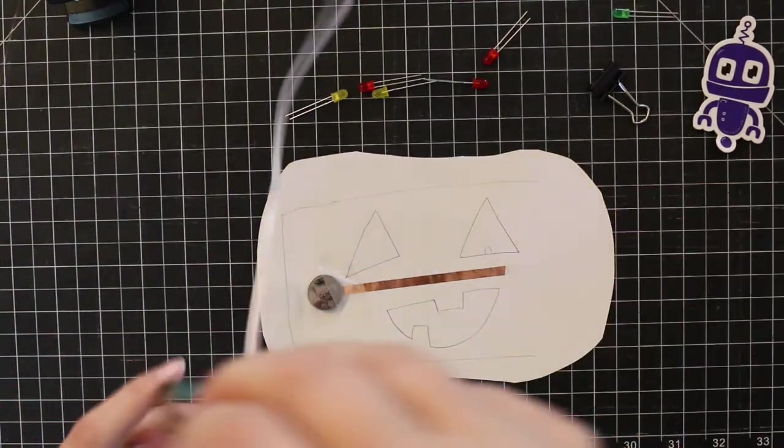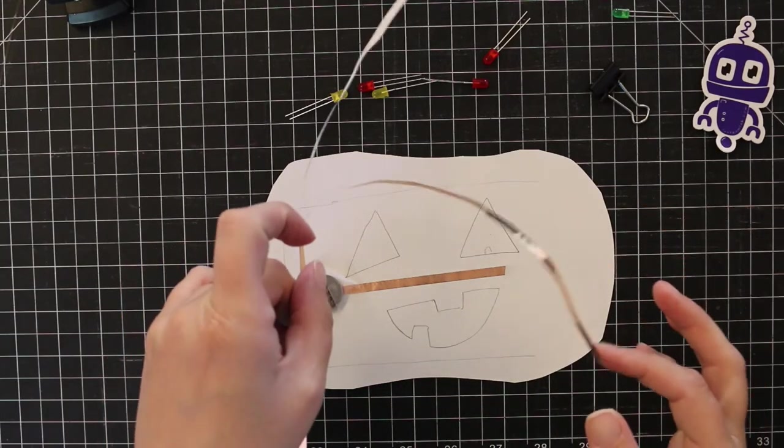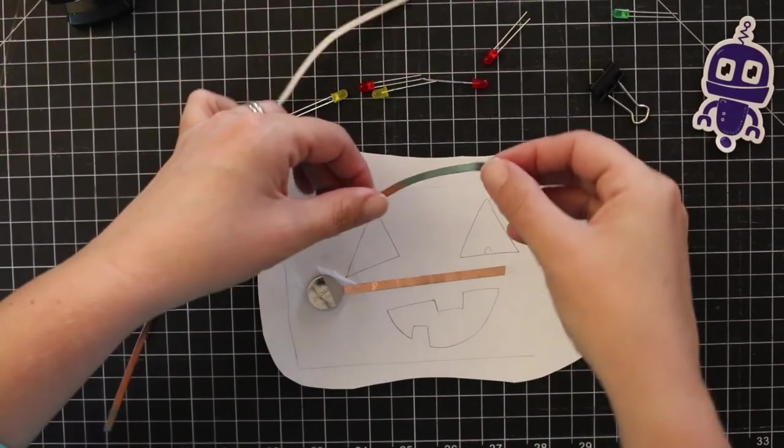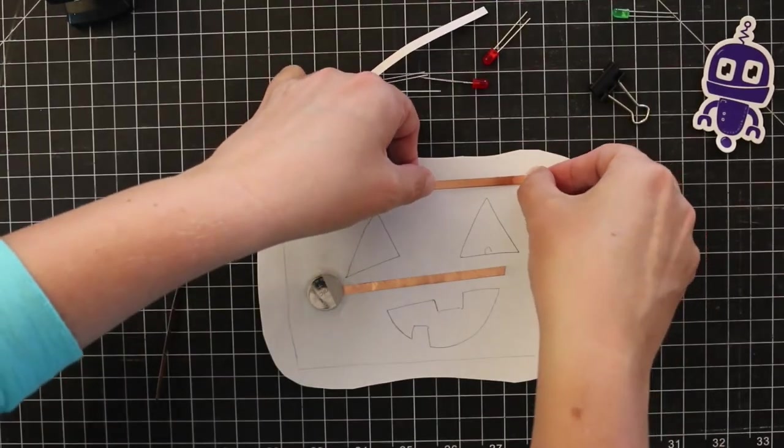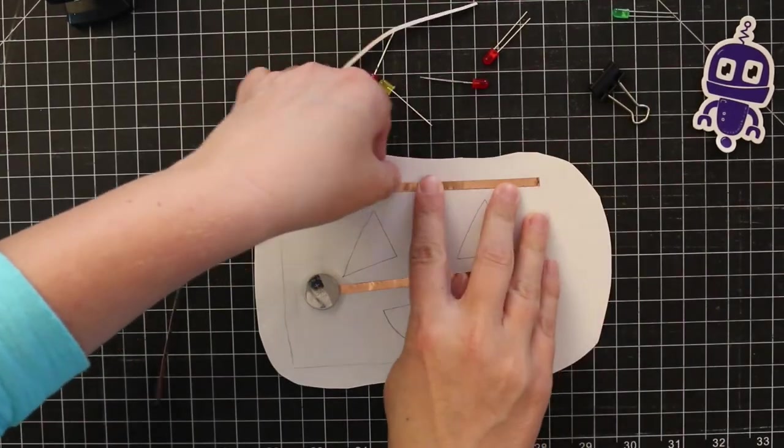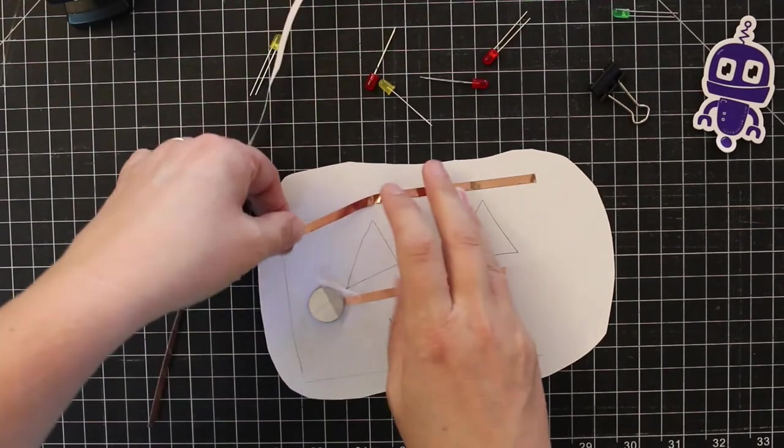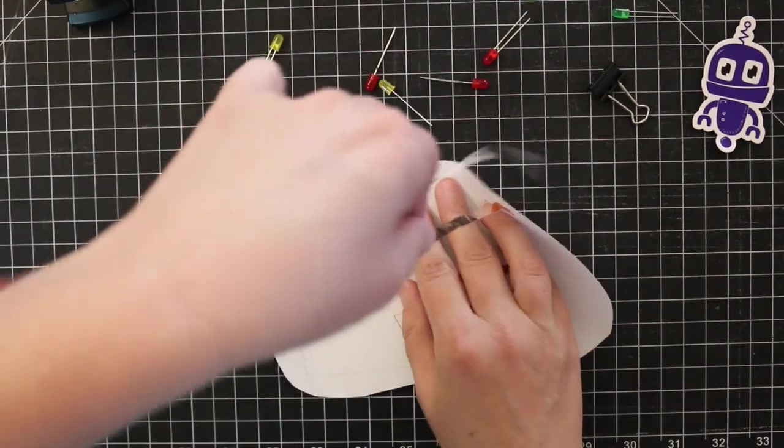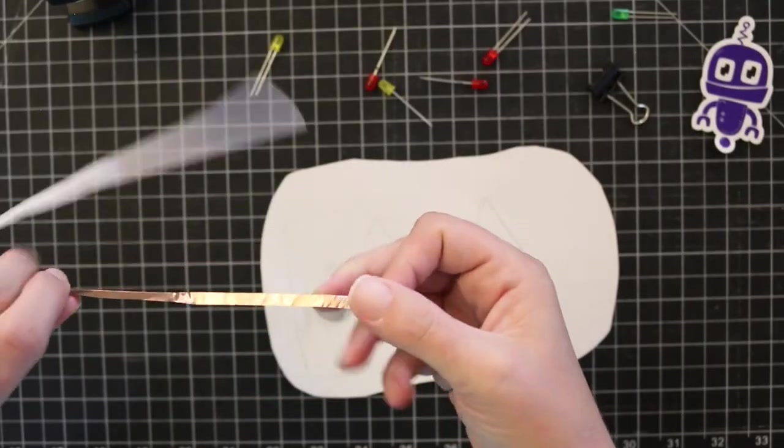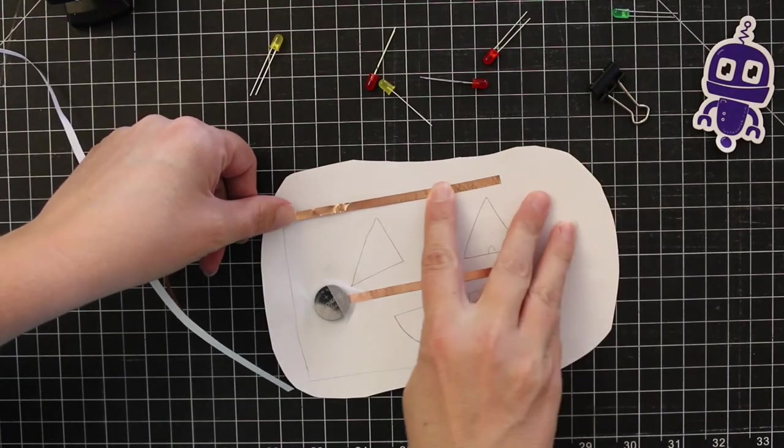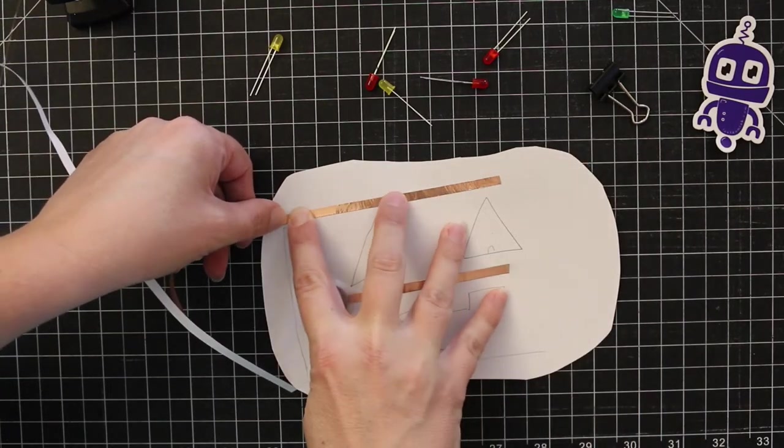We're going to take our next piece of copper tape. I don't pull all of the backing off at once because I don't want it to get unruly. We're going to start it up in this corner, follow the path. Oh I started it too far out. I forgot. I'm going to start it around here. The top of the eye. Follow this path.